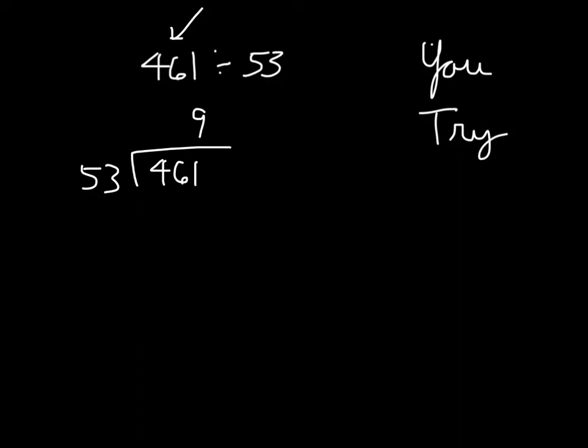9 times 3 is 27. 7, regroup the 2. 9 times 5 is 45, plus 2 is 47. Uh-oh. That didn't quite work. Can set it up again, because that was too high.